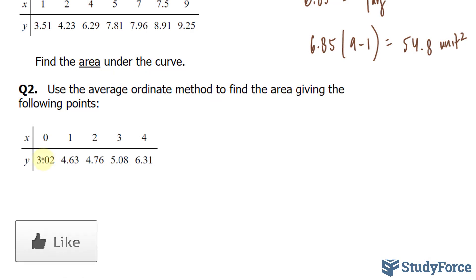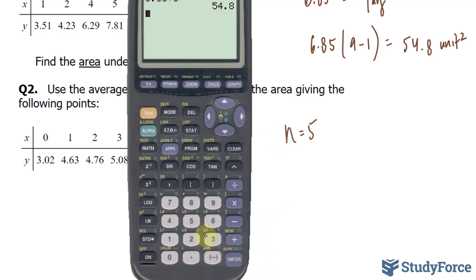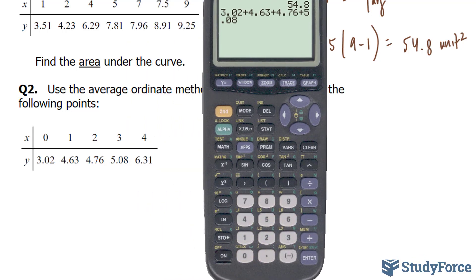Once again, I will add up all five of these observations and we are going to give that the letter n. Using our calculator, we have 3.02 plus 4.63 plus 4.76 plus 5.08, and finally, plus 6.31. And dividing this now by 5, that gives us 4.76.